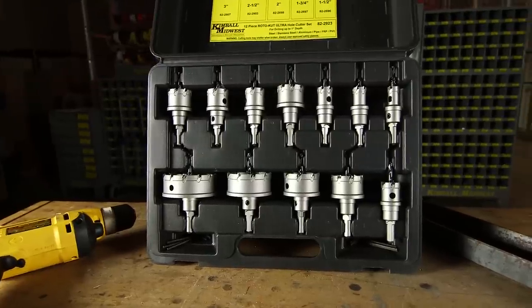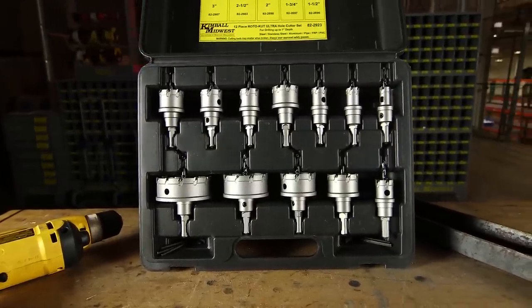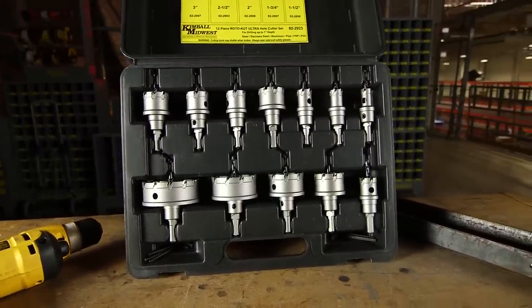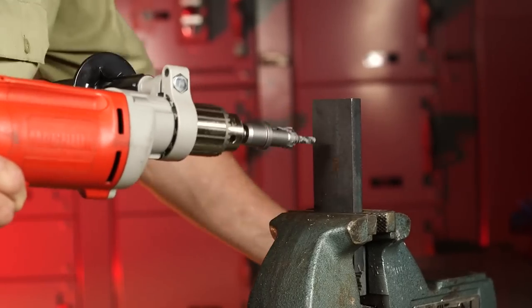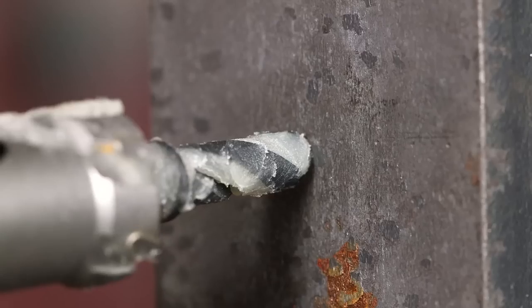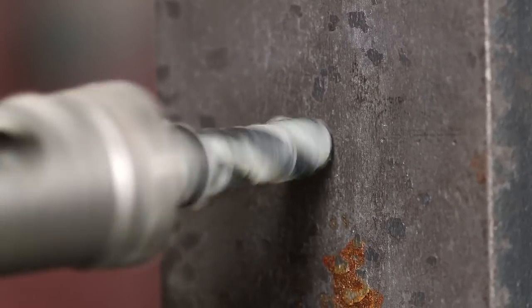This heavy-duty version of our Roto-Cut line of tools can cut holes up to four and a half inches wide in steel up to one inch thick. The 135-degree split point on the pilot drill bit cuts the alignment hole without the need for a center punch.